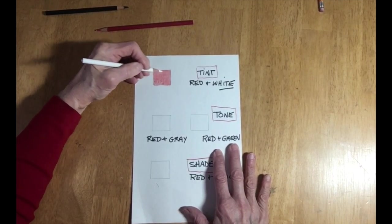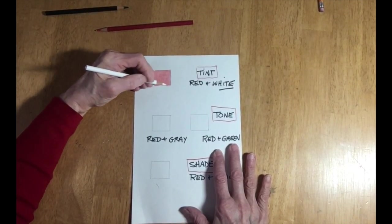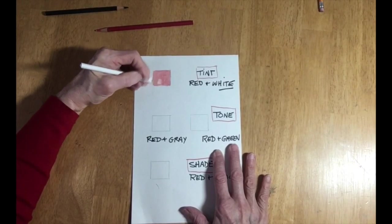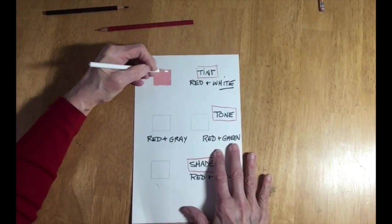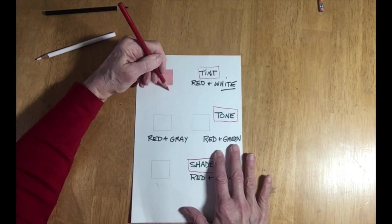Here we're doing something called burnishing with the white and we're adding a lighter value to the red which will create a pinkish kind of color and that is called the tint.